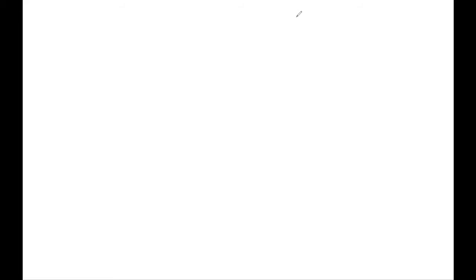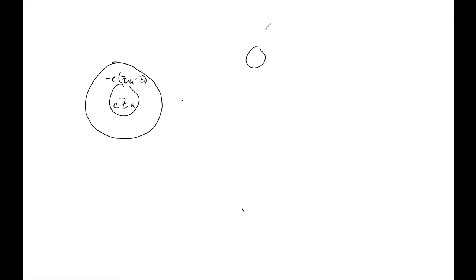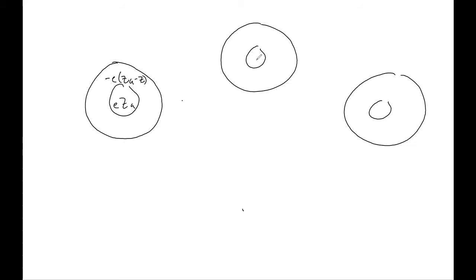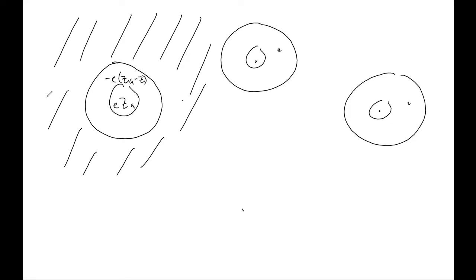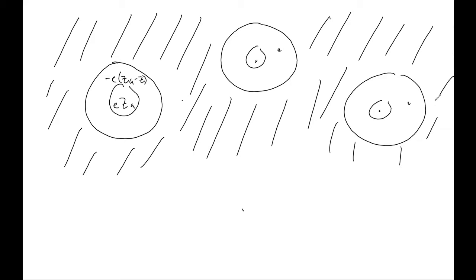In the Drude model, we imagine that an extended material system looks like a set of positive cores of atoms surrounded by core electrons. These are the positive cores, and these are the core electron clouds. Imagining that these atoms are part of a larger bulk material, around all of them is a cloud of valence electrons that are entirely delocalized. It's these delocalized valence electrons that mediate the conduction of electricity through bulk solids.